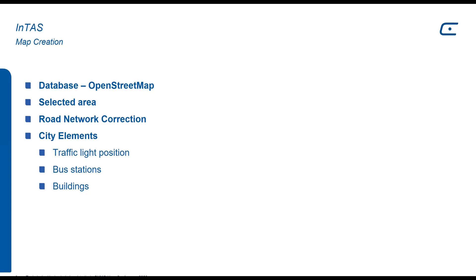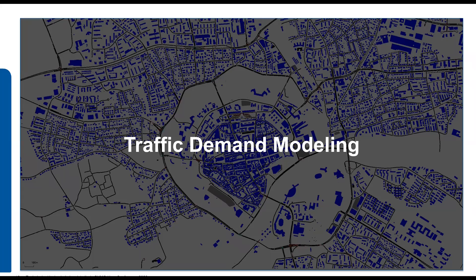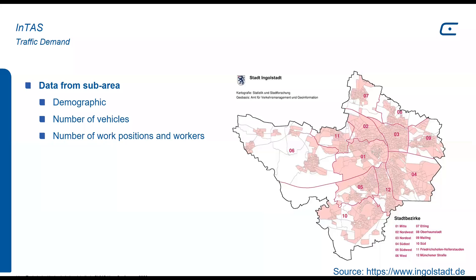The next step to develop InTAS was to define the traffic demand modeling. I would like to introduce a little bit of the structure of Ingolstadt. The city is divided into 12 main areas, and each area is divided into sub-areas. For each sub-area, we had access to detailed demographic data, the number of registered vehicles, number of work positions, and workers that live in these areas.